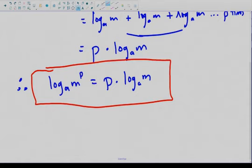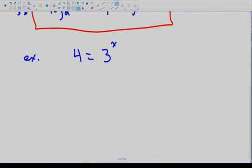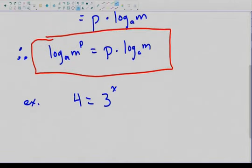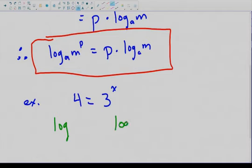For example: if you had 4 equals 3 to the x — like scenarios from yesterday — take log of both sides (log base 10, one of the two you have on your calculator). Using the power law, it pulls the exponent x down in front: log 4 equals x times log 3. Now you can isolate x by dividing both sides by log 3.